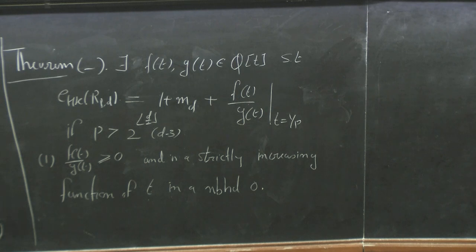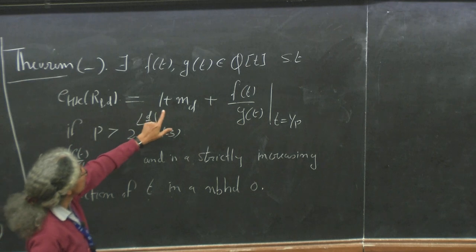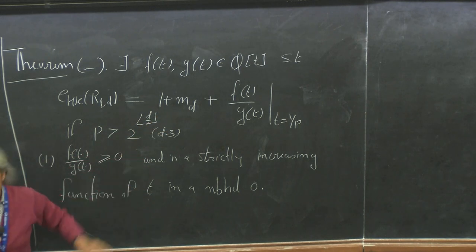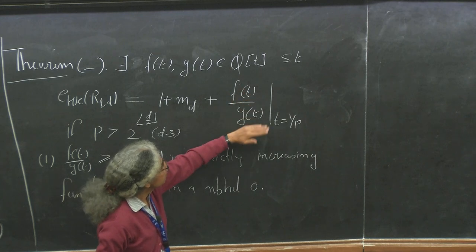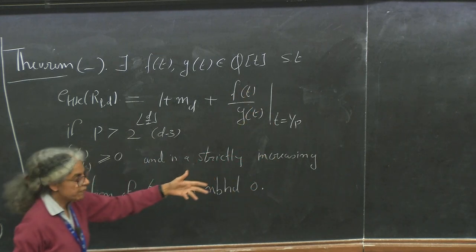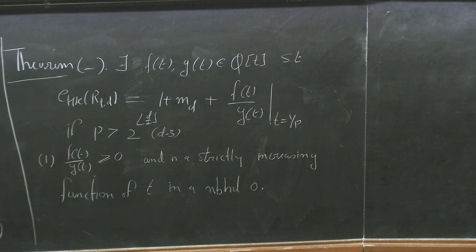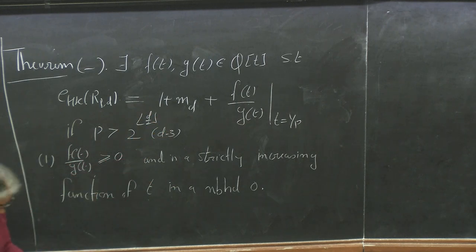The implication of this theorem: the non-negative quantity EHK of R_P^D is always greater than or equal to 1 + M_D for p greater than d(d−1) — a much smaller bound than required before. That's part two of the Monsky conjecture. Second, since f(t)/g(t) is strictly increasing in t near zero, this means EHK of R_P^D is strictly decreasing as p varies for large enough p. This relates to the Watanabe question, proving it for all sufficiently large p.